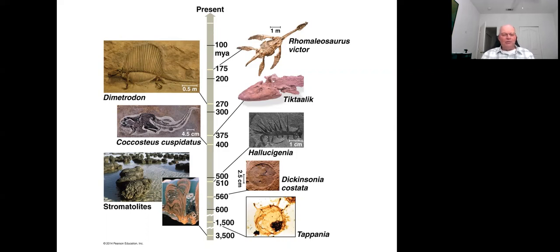Around 65 million years ago something happened that drove the non-avian dinosaurs, pterosaurs, plesiosaurs, ichthyosaurs, and mosasaurs to extinction, along with around 70 percent of all other species. However, not all dinosaurs disappeared — we have to reframe what we say about the extinction of the dinosaurs and specify 'non-avian dinosaurs,' because dinosaurs are still with us. We call them birds.